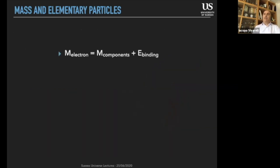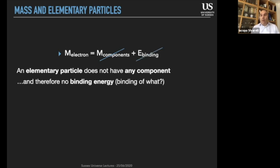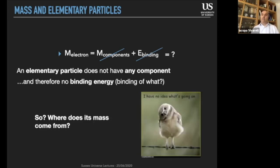How do we apply that simple relation to an elementary particle? What can I say about an electron? Well, because the problem is obviously that if I don't have any components, then the mass of the component is going to be zero. And if I have no components, clearly there's no binding energy, because binding of what? If I have no components, there's nothing to be bound. So the question is really, where does the mass of elementary particles come from?